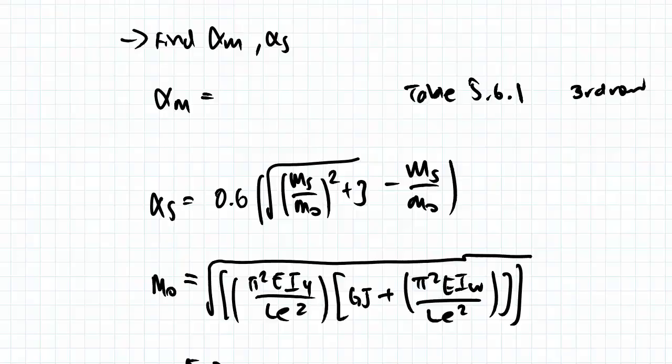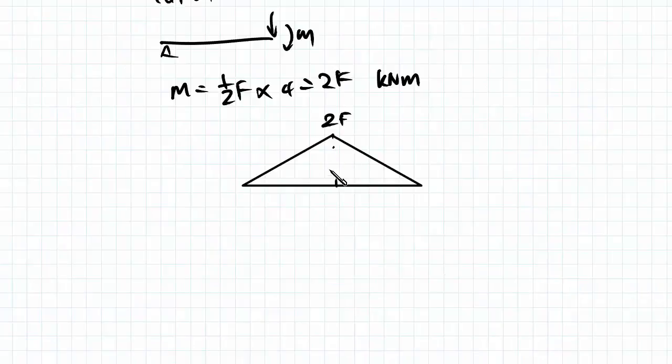So firstly to find alpha m, we can find alpha m using table 5.6.1, depending on the shape of our bending moment diagram. If you remember, the bending moment diagram looked like this between the two restraints.